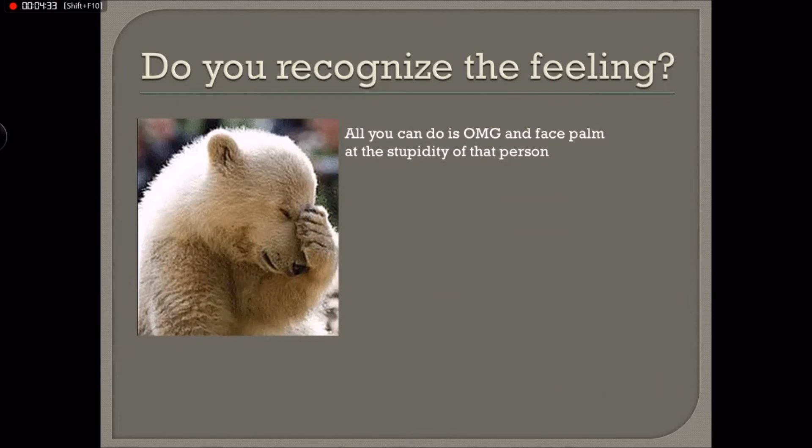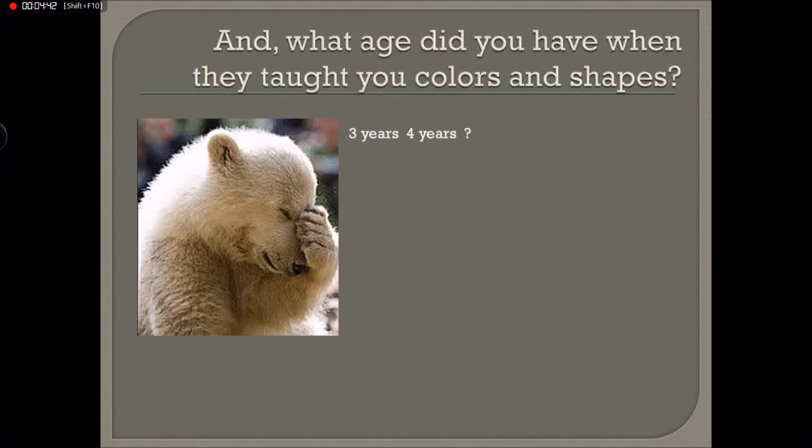So do you recognize the feeling? You know, all you can do at that point is facepalm at the stupidity of the person, especially because we can put an age to it. So we can check, and I've done some research because so long that I've been at school that I had no idea anymore at what age do you learn shapes, what age do you learn to count and add. So understanding colors and shapes is basically three to four years. Yeah. So if somebody doesn't understand that, he has the brain of a three or four year old, it's obvious. And for a grown up, you can pretty much say that is retarded.